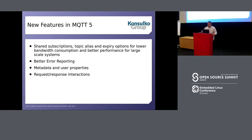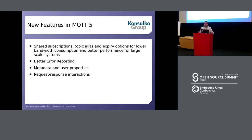A few words about MQTT 5 — what's new: better error reporting, metadata and user properties, request-response interactions, shared subscriptions, and better performance for scalability. In home automation, scalability isn't that important since you're running an MQTT server at home for your own needs. However, if you're building a cloud application, scalability becomes a problem — you might have millions of users generating thousands of messages each, creating a huge volume of messages.